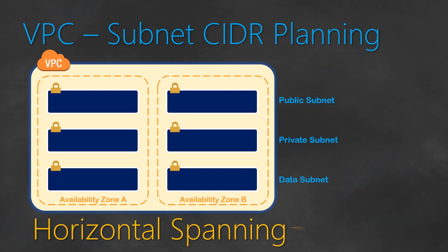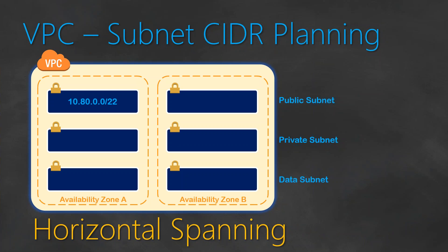We can start assigning IP addresses in the horizontal spanning way. In horizontal spanning, we assign an IP address for the first availability zone — for example, the public subnet gets 10.0.0.0/22, giving about 1024 IP addresses for the public subnet in availability zone A. Then we continue the IP addresses on availability zone B, starting with 10.0.4.0/22, giving another 1024 IP addresses.